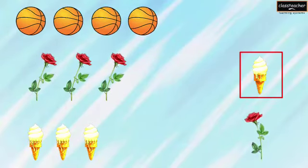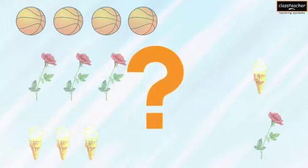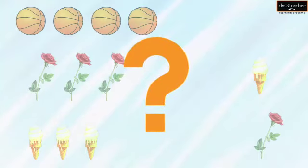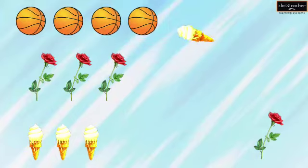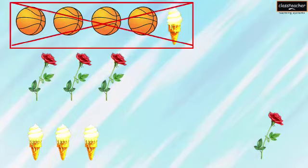Let us look at the second object, which is an ice cream cone. In which of the three groups should we place it? Let us look at the first group — it is a group of balls. An ice cream cone is different from a ball, so the second object, which is an ice cream cone, does not belong to the group of balls.